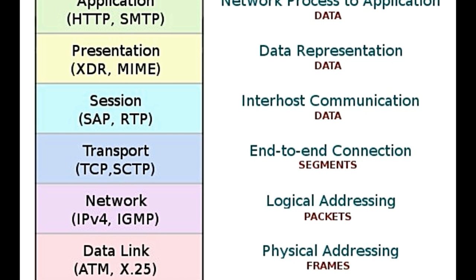Physical layer: As the name suggests, it deals with the physical components of a network. It is responsible for the activation, maintenance, and deactivation of various physical links that act in data transmission. Electrical signals, voltage levels, and data transmission rates are some of the major elements defined by the physical layer. It is also responsible for passing and receiving bytes from the physically connected medium. The OSI model is a conceptual framework of seven different layers that helps you understand the working of a network in a simple and easy manner.